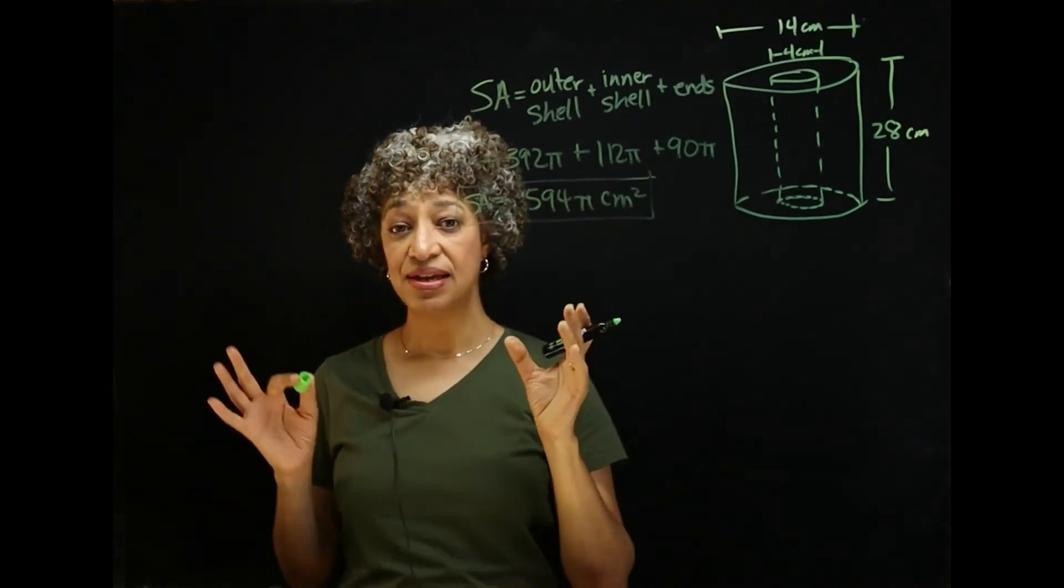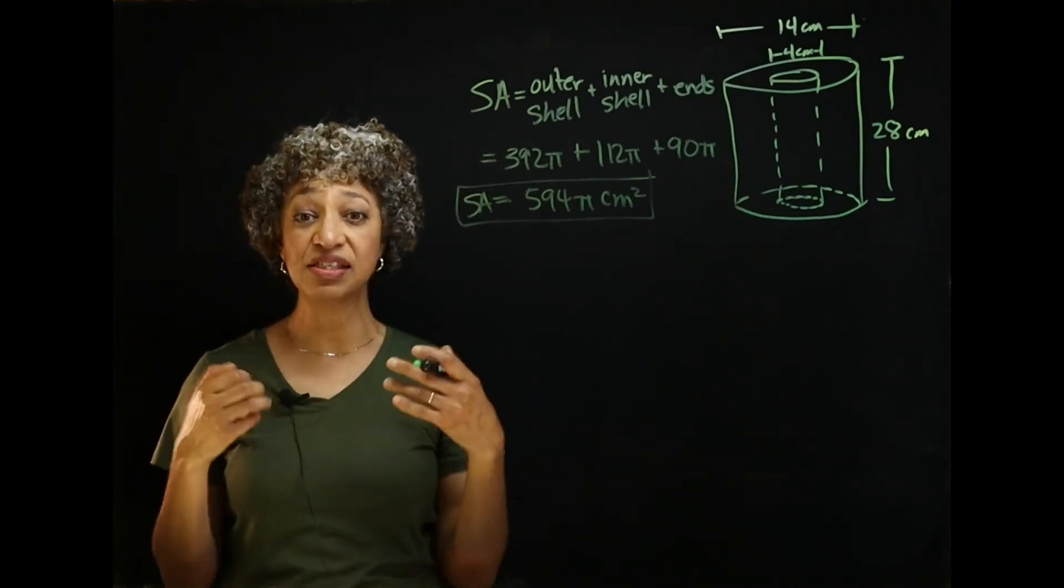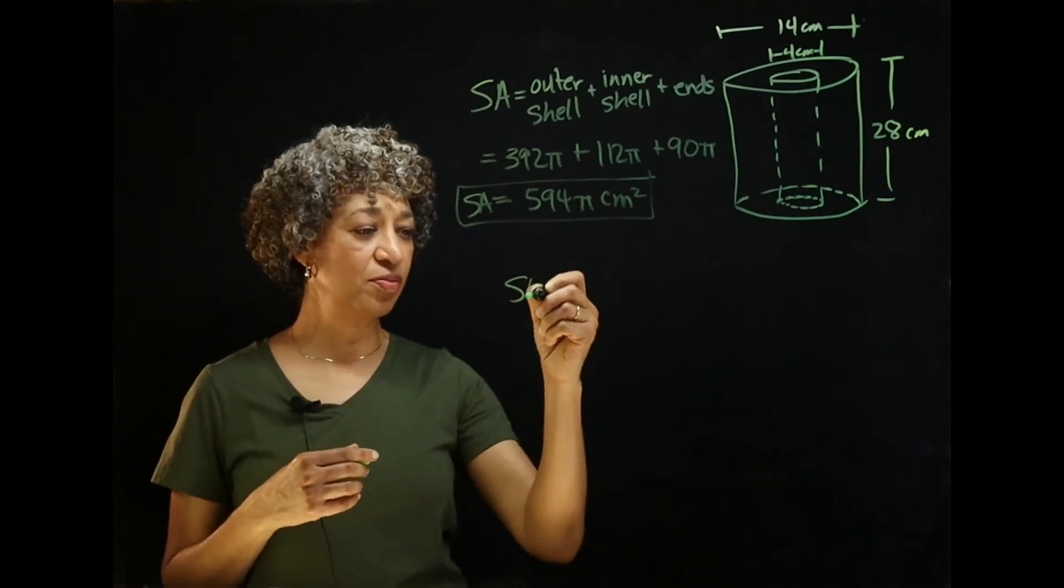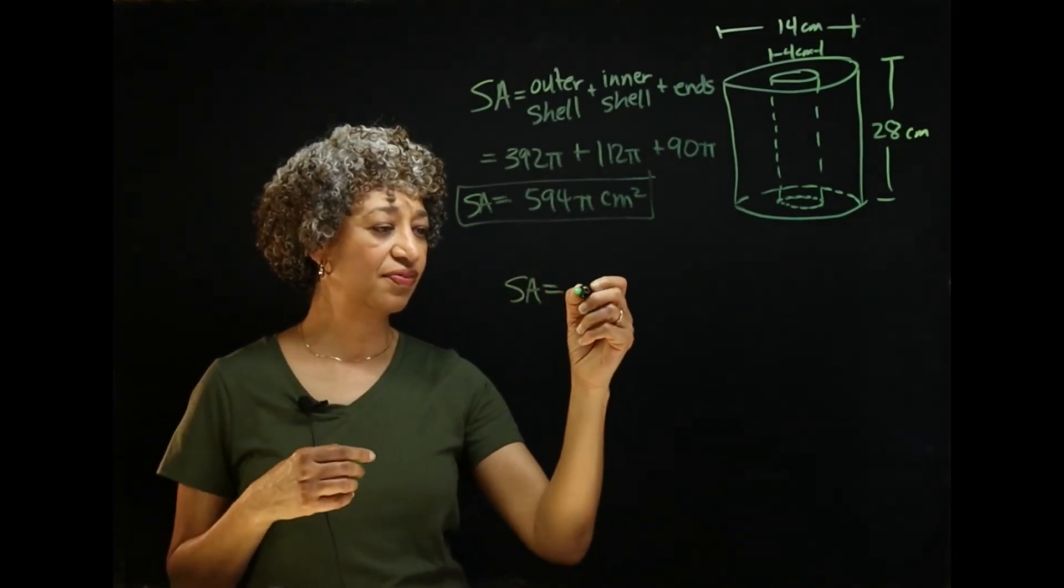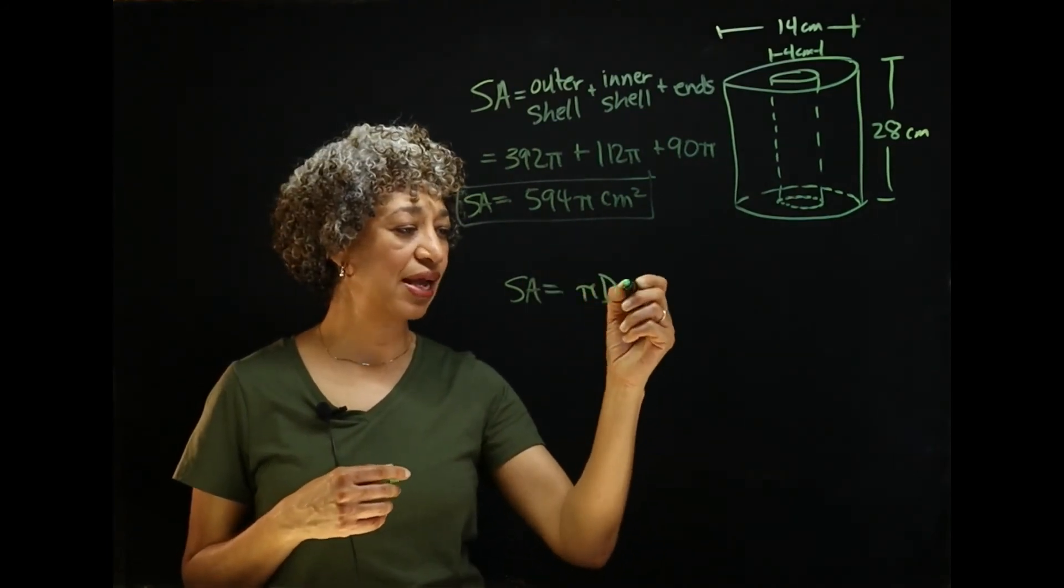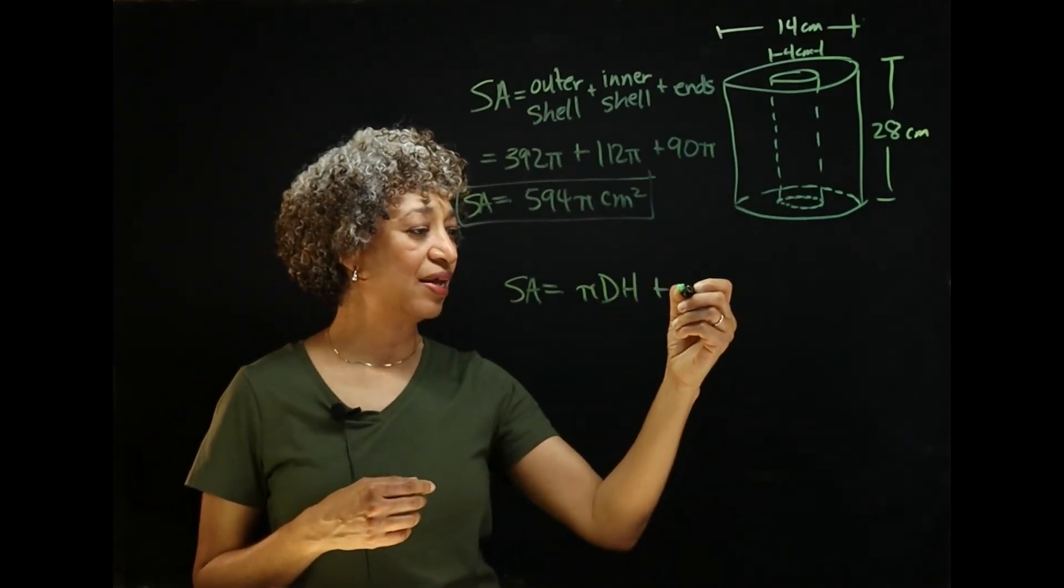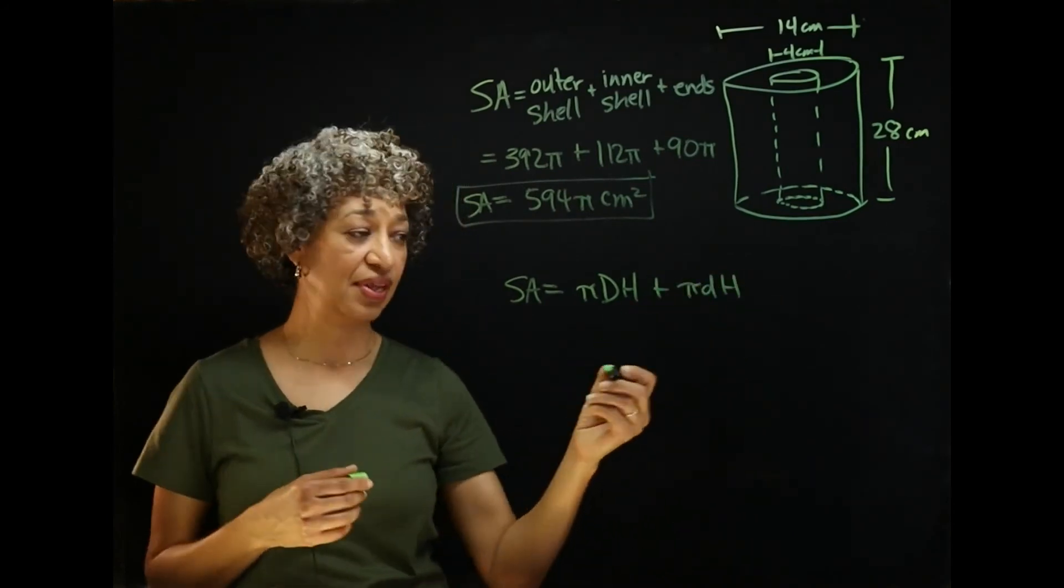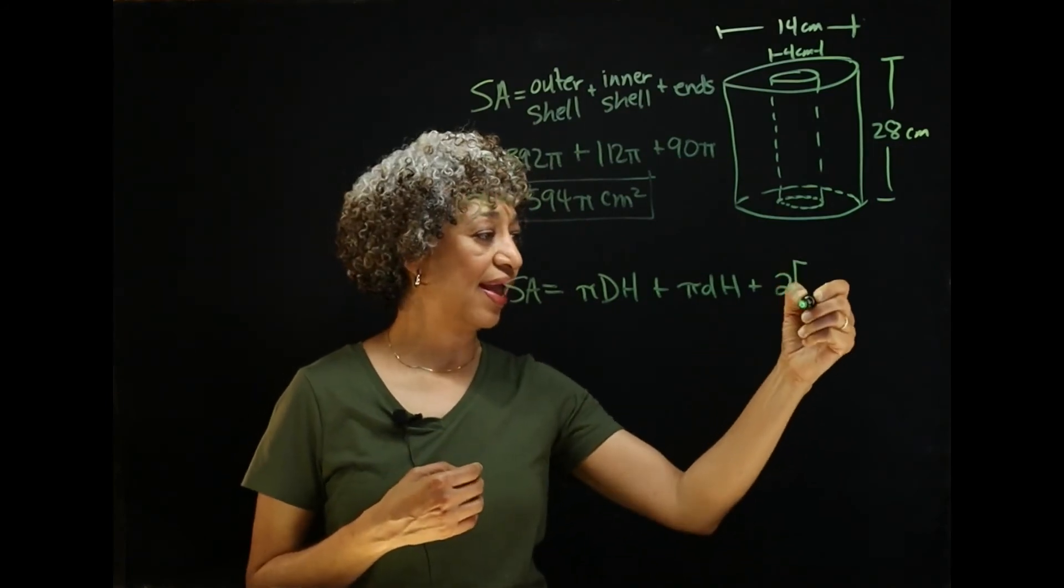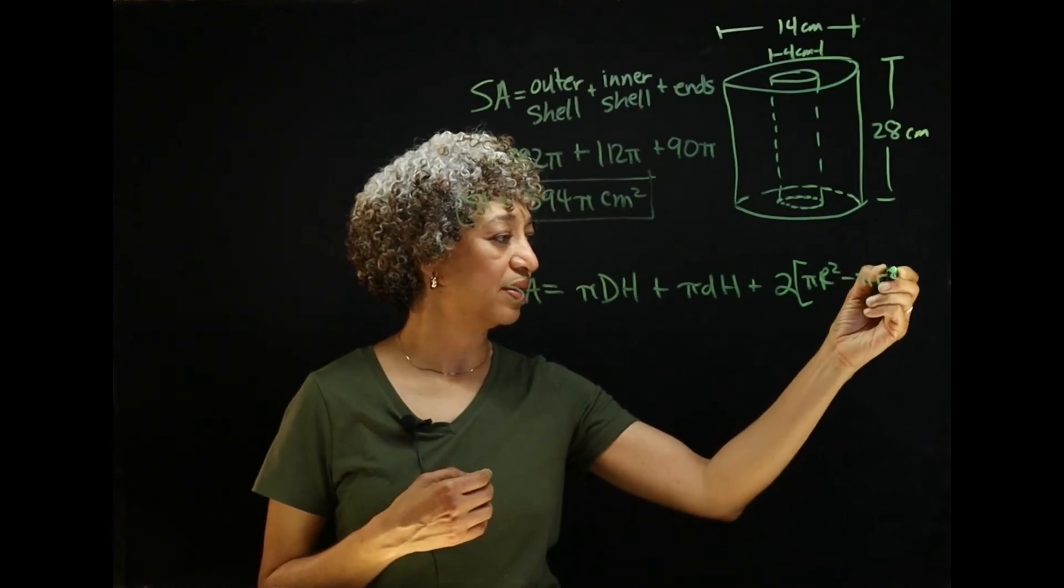Now, some of you might like using formulas. So, I would like to sum up what we did using a formula. Here's what we did. If you like formulas, we found the area of the outer shell, which was pi times the diameter times the height. I use a big D for the big diameter. We added pi times the little diameter times the height. And we added an annulus on each end. Two annuli. Pi big R square minus pi little r square.